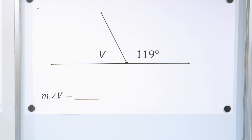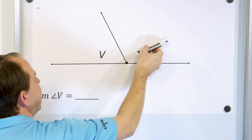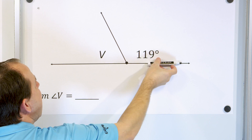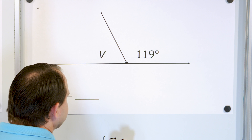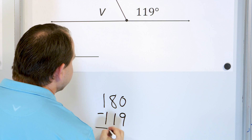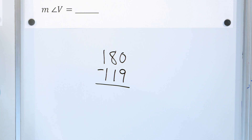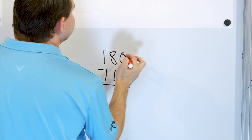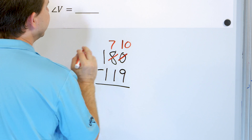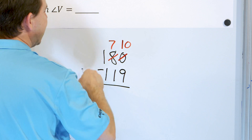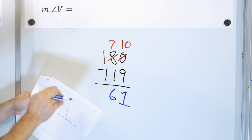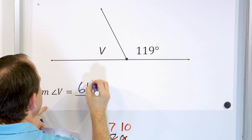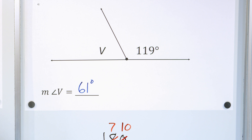Here's problem number four. What is the measure of angle V? Same thing — we have a straight angle here, so the larger angle is 180 degrees. We take 180 and subtract off the 119 degrees we're given, and whatever is left over must be angle V. 180 minus 119: we borrow, 10 minus 9 is 1, 7 minus 1 is 6, 1 minus 1 is 0 — so the measure of angle V is 61 degrees.